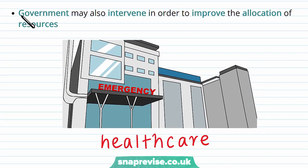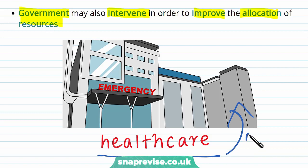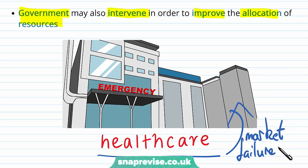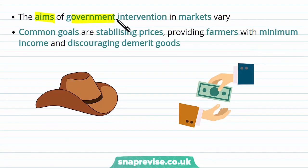An example is where governments may intervene in order to improve the allocation of resources. One example is healthcare — they believe the provision of healthcare is experiencing a market failure, and therefore the regulatory input is going to be a change in the law which says that the general public receive free healthcare, and as such with that law in place the government begins to set up a free-to-access public healthcare system.